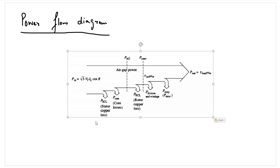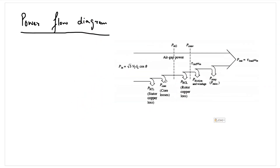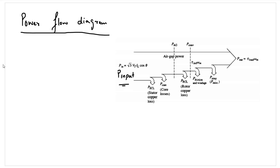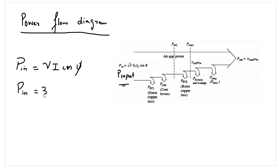This here represents the power flow diagram of a three-phase induction motor. On this side we have the input power. In case of a single-phase induction motor, the input power will simply be V·I·cosθ — the real power of the system. In case of a three-phase induction motor, the input power is three-phase, so it will be 3·V_phase·I_phase·cosθ, where V_phase and I_phase represent the phase voltage and phase currents.